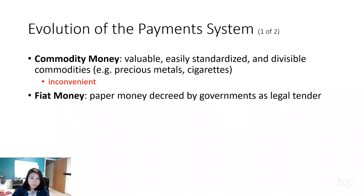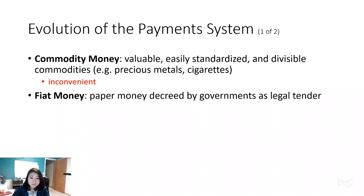Because commodity money doesn't work that well, later people came up with the idea of fiat money — the money we put in our wallets every day: the one dollar bill, ten dollar bill, twenty dollar bill, hundred dollar bill. The characteristic of fiat money is that it is made of paper, decreed by government as legal tender. It's usually just a piece of paper or plastic, like a Canadian dollar, and it doesn't have value by itself — the reason it can store value is because the government backs it up.